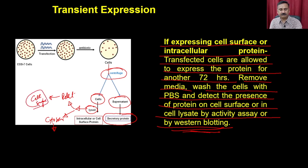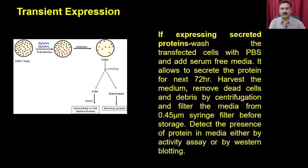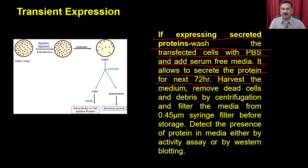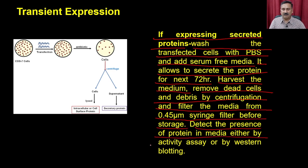If you are expressing secretory proteins, wash the transfected cells with PBS and add serum-free media, allowing the cells to secrete proteins for the next 72 hours. Harvest the media, remove dead cells and debris by centrifugation, and filter the media with a 0.45 micron syringe filter before storage. Detect the presence of the protein in the media either by an activity assay or by western blotting.